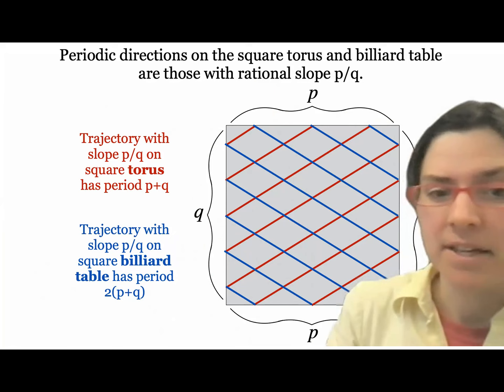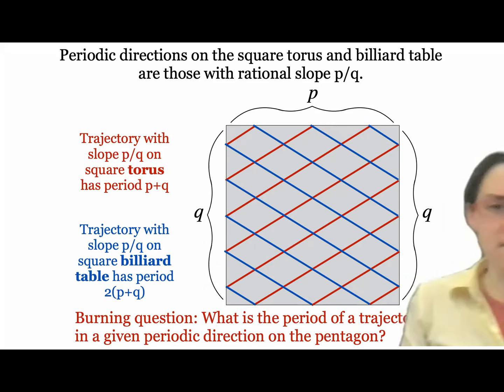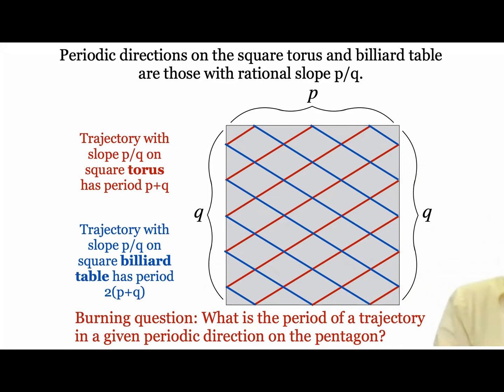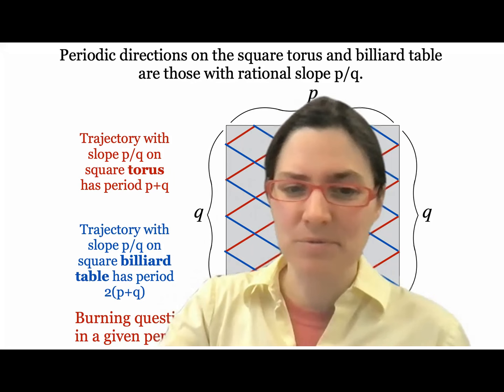My burning question as a graduate student was: okay, this is really nice for the square, but what about the regular pentagon? If I hit my ball in a regular pentagon billiard table in a direction I know is periodic, what is the period? This is our motivating question for the next little while.